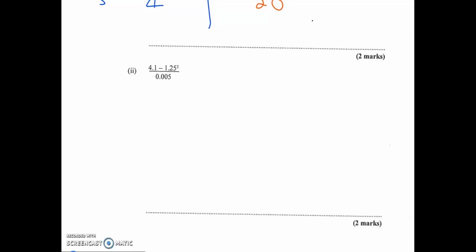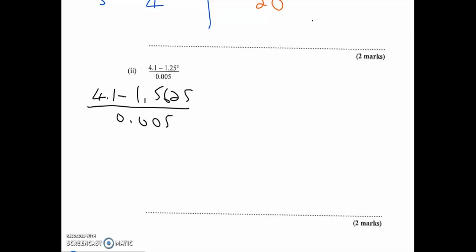Part two: I have (4.1 − 1.25²) all over 0.005. By BODMAS, we do the index before subtraction, and work out the entire numerator before the denominator. Using the calculator, 1.25 squared is 1.5625. So we have 4.1 minus 1.5625 all over 0.005.